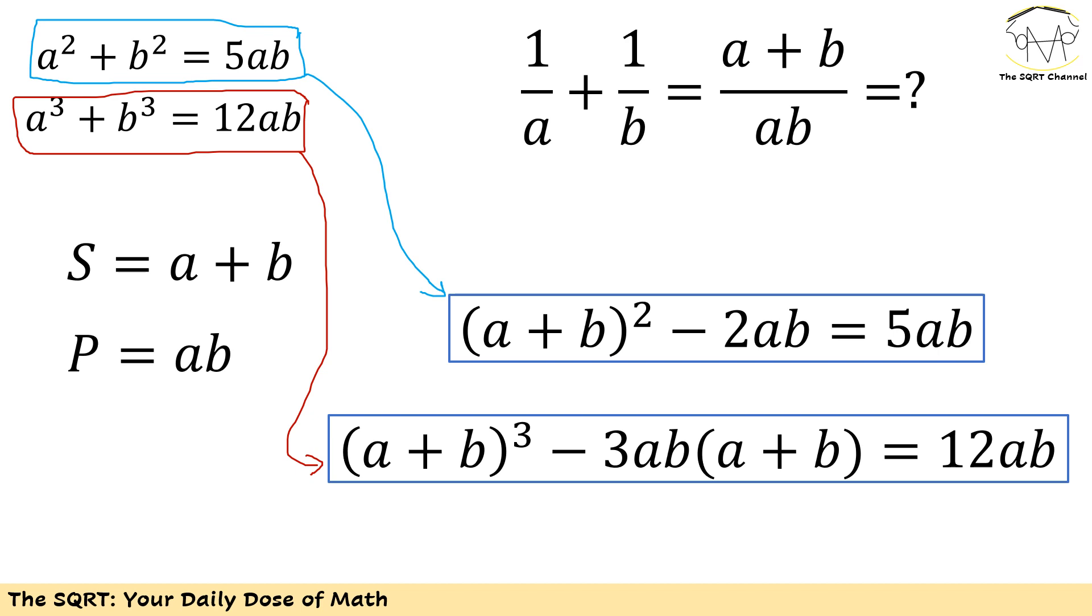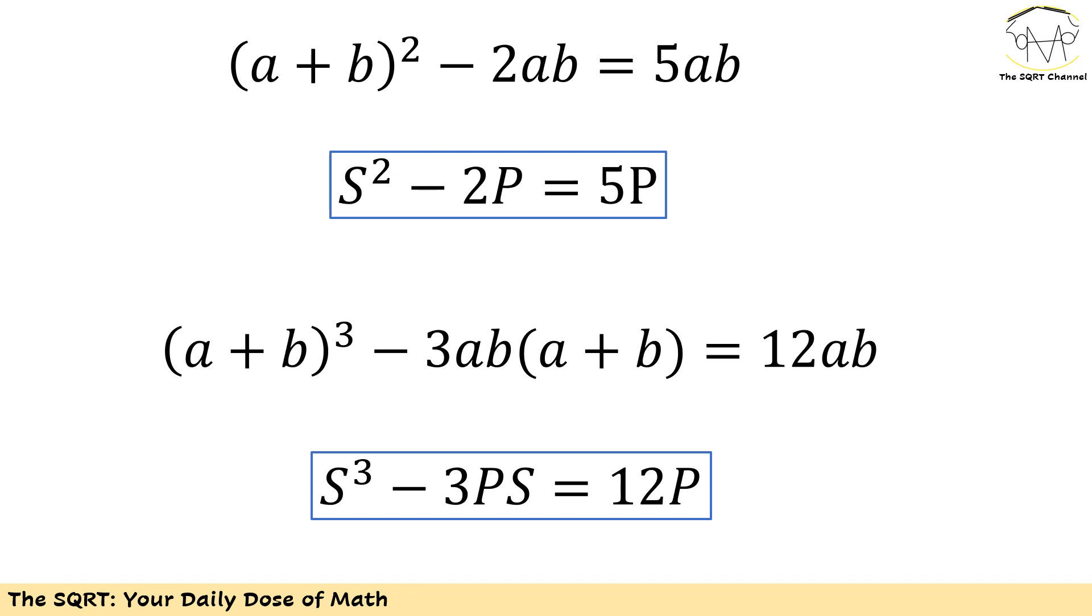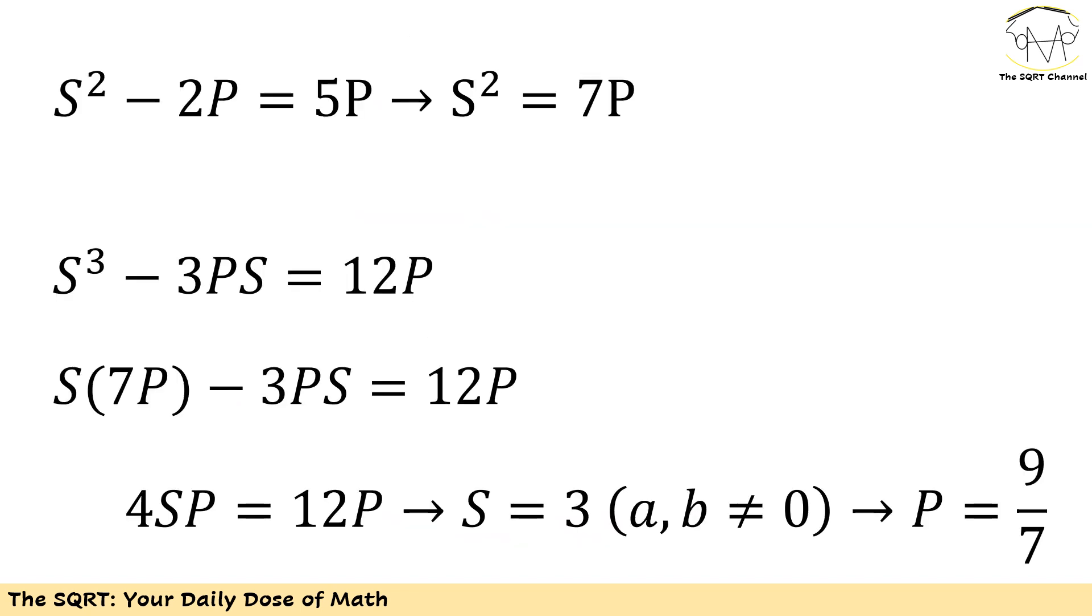Now I'm going to replace a + b with s and ab with p, and then I will find the values for s and p. To do this let's start with the first one. We have s² - 2p = 5p. For the second one I'll end up with s³ - 3ps = 12p. The first equation can be simplified more. What I'm going to end up with is s² - 2p = 5p, or s² = 7p.